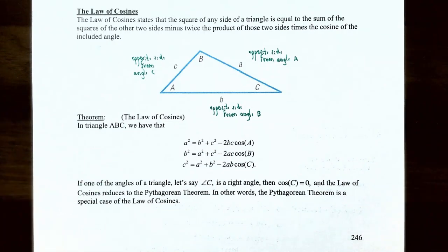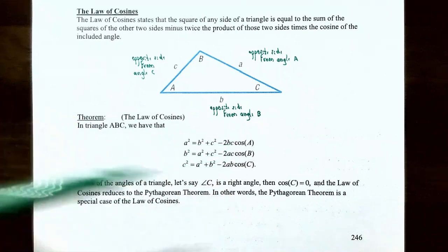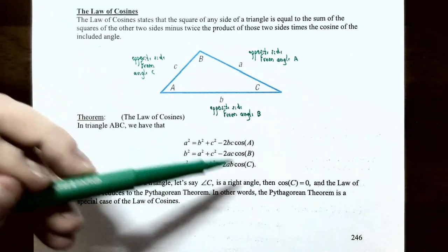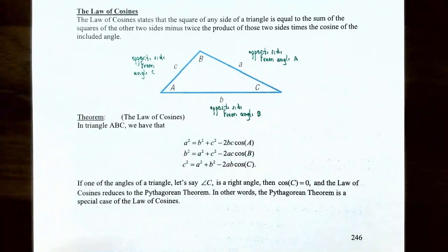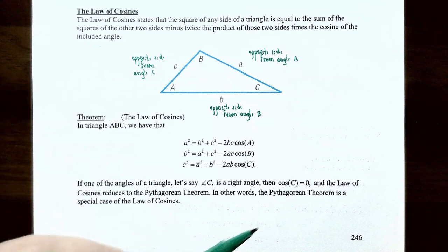If one of the angles, say angle C, is a right angle, then cosine of 90° equals 0. So the law of cosines reduces to the Pythagorean theorem: a² = b² + c², or b² = a² + c², or c² = a² + b². The Pythagorean theorem is a special case of the law of cosines, which works for oblique triangles, whereas the Pythagorean theorem only works for right triangles.